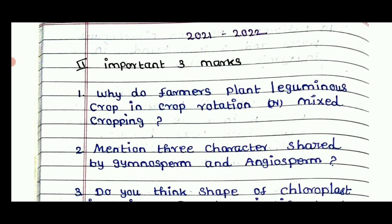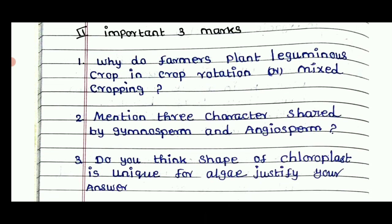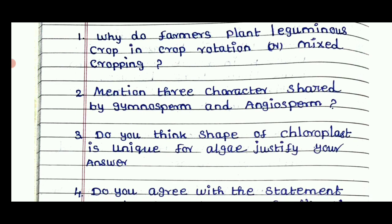First question: why do farmers plant leguminous crops in crop rotation and mixed cropping? If you look at the first chapter, you will have a question in the first chapter. You will have to mention the characters of gymnosperm and angiosperm. So if you look at the 5-mark, the 2-mark, and the 3-mark questions.